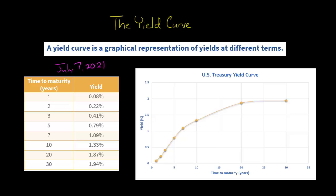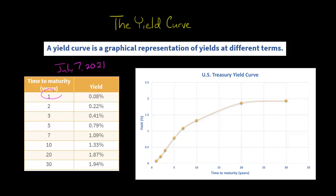These different Treasuries have different times to maturity, and I looked up the yield for each time to maturity. A one-year Treasury bill was 0.08%.